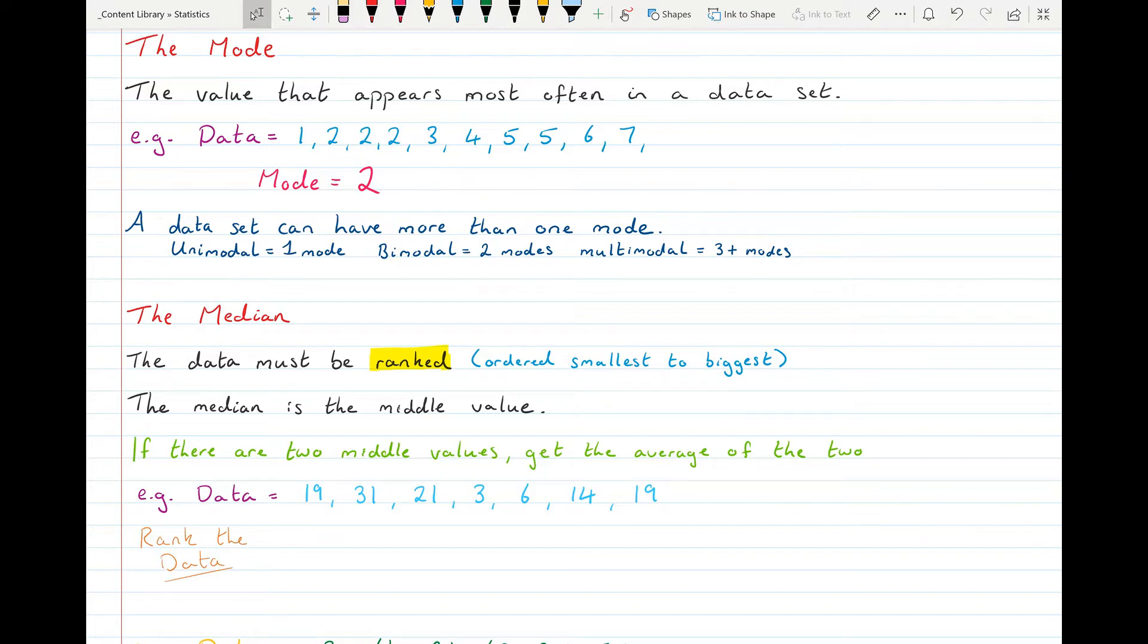So the first example, I have the data 19, 31, 21, 3, 6, 14, 19. Well, I have to rank the data. So it's going to be 3, then 6, then 14, we have two 19s, a 21, and a 31. So now it's ranked in order.